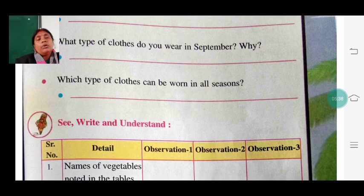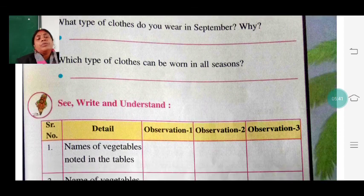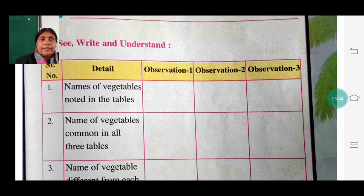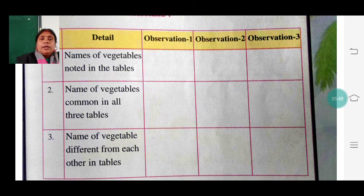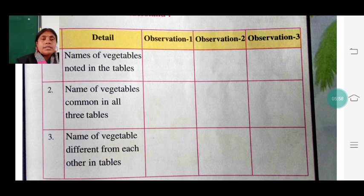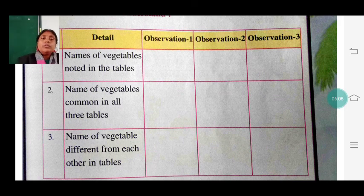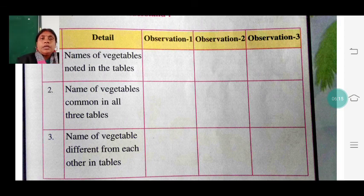Now, the type of vegetables: in observation 1 in the month of June, what type of vegetables are we getting? Then in September, then in December. As you know, nowadays advanced technology means we are getting all types of vegetables and fruits for the whole year, which was not possible in earlier times. Seasonal fruits and vegetables are still more in demand.